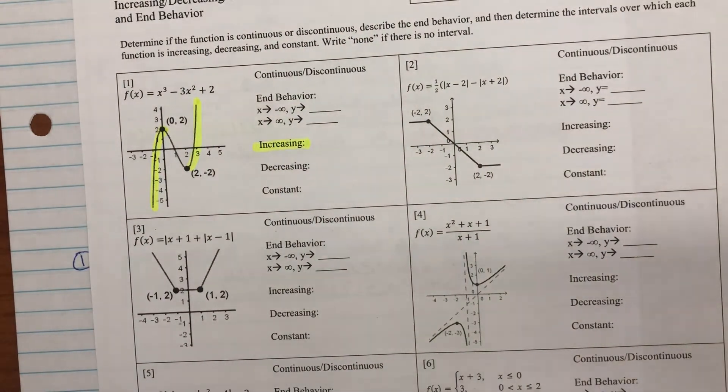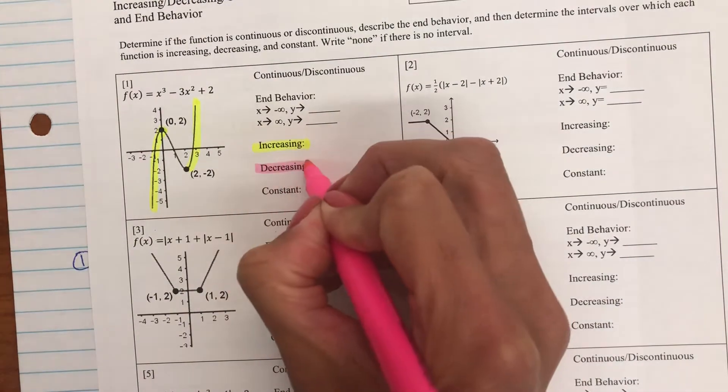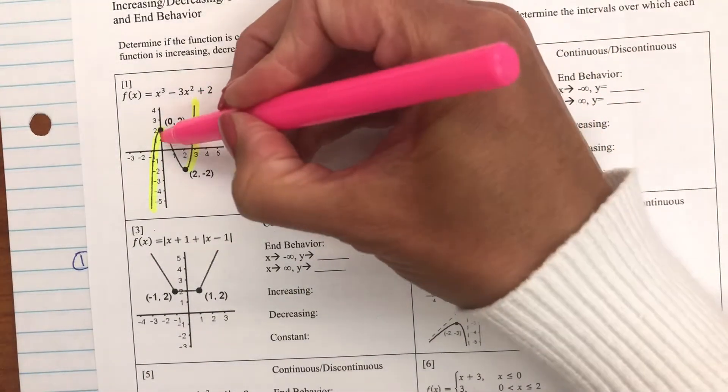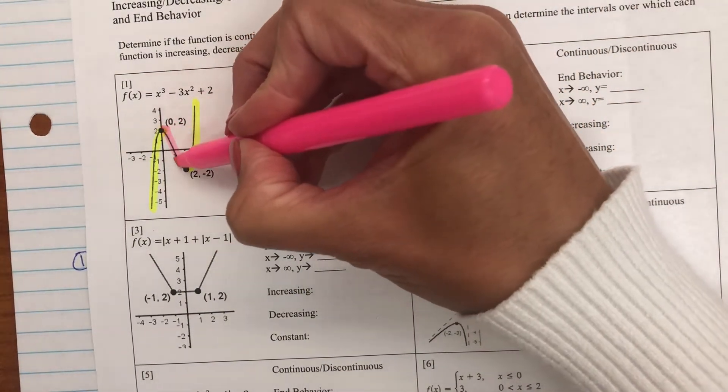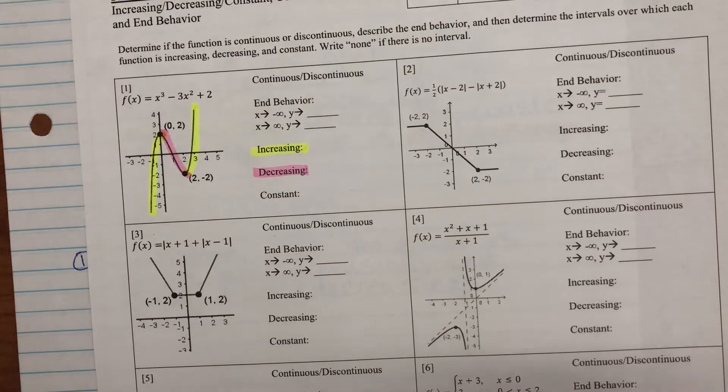Now, I want to see where it's going down. Decreasing, and I'm going to do it in pink. The graph is going down right there. That's step one.